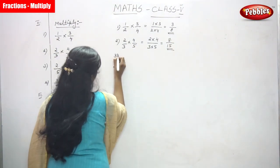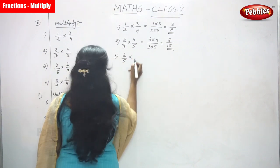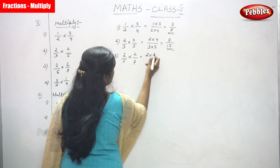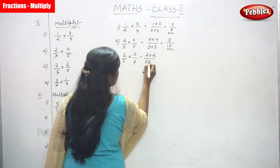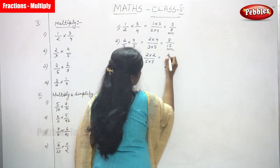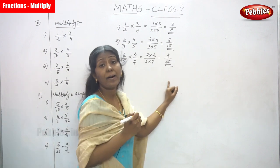Next question. 2 by 5 into 2 by 7. So, 2 into 2 divided by 5 into 7. So, the answer is 2 into 2, what? 4. So, 5 into 7, what? 35. So, the answer is 4 by 35.